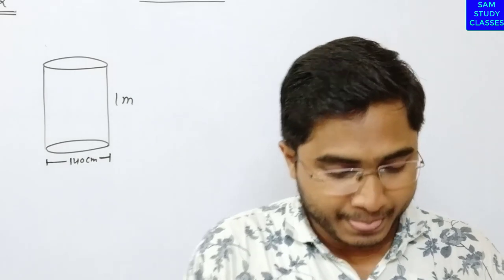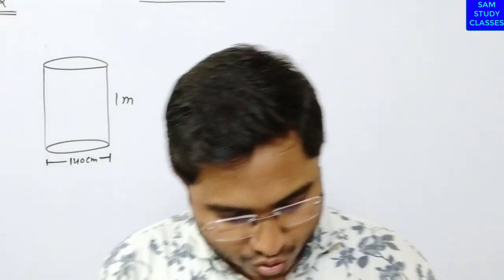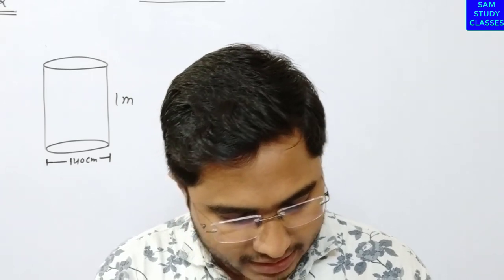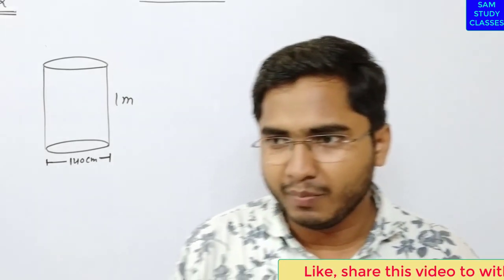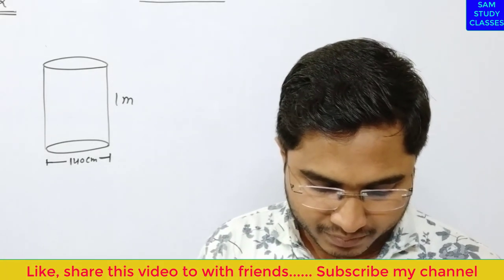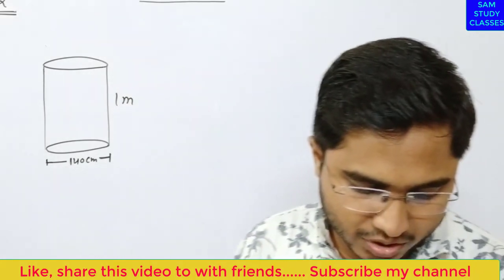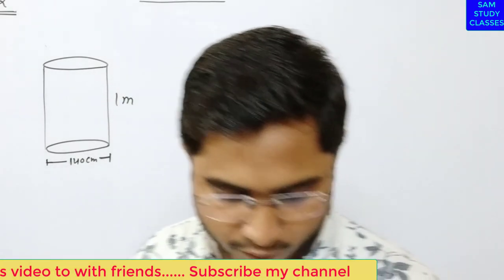Q2. It is required to make a closed cylindrical tank of height 1 meter and base diameter 140 cm from a metal sheet. How many square meters of metal sheet are required for the same?